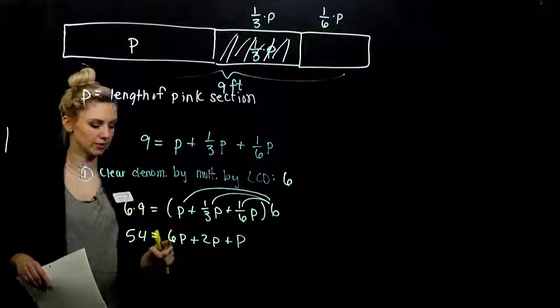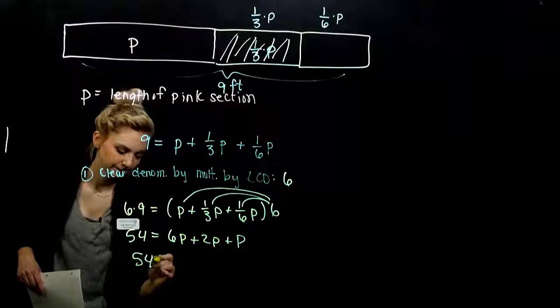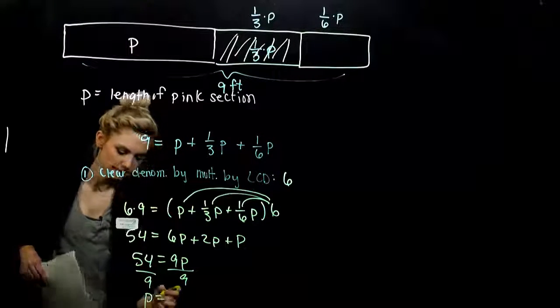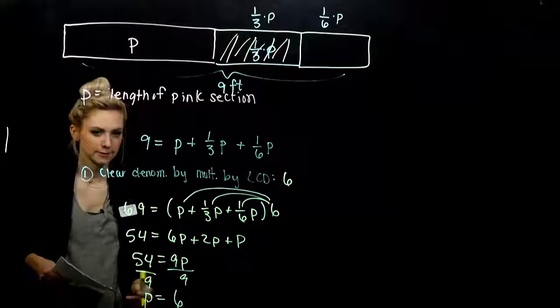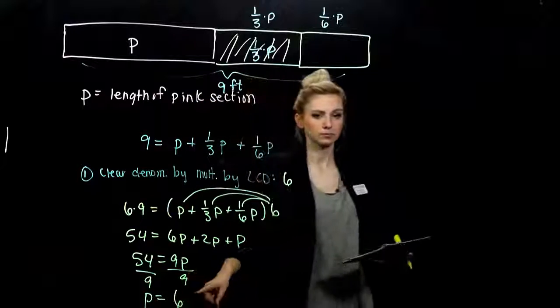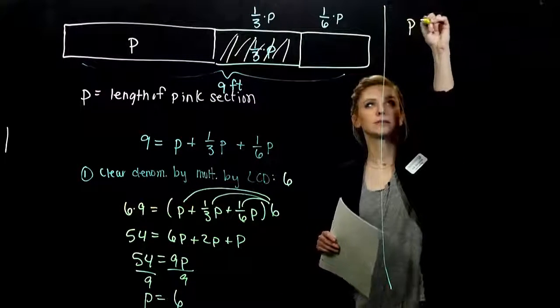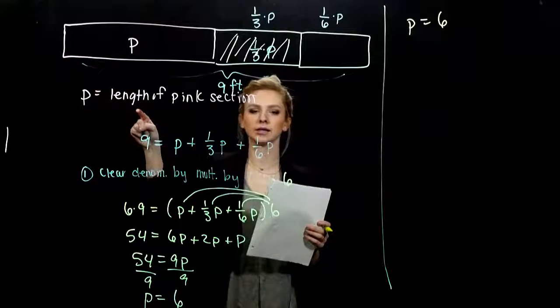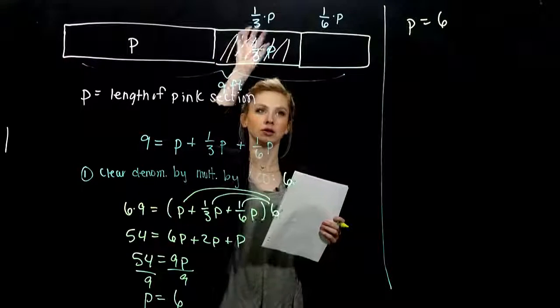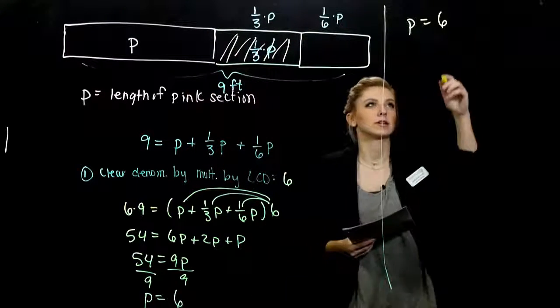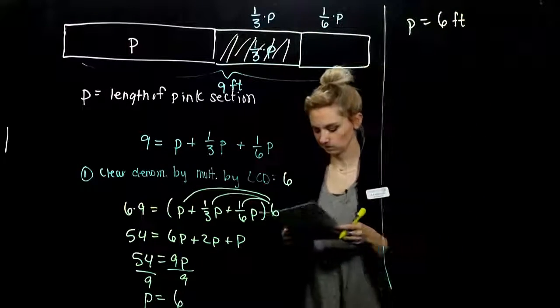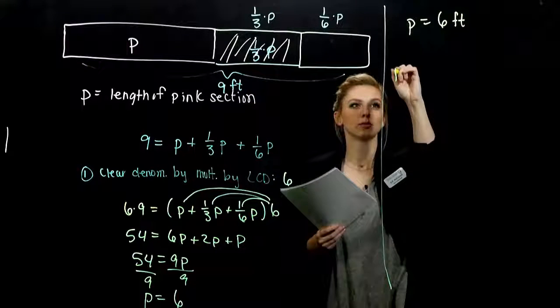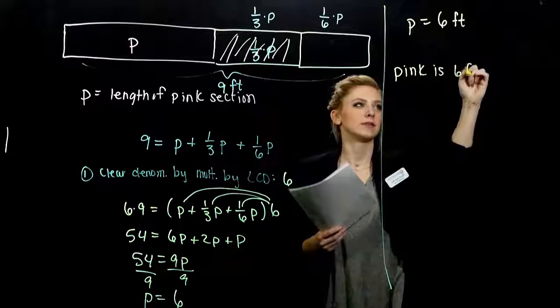So I've got nine altogether. So when I divide both sides by nine, what is p in this case? Six. P is six. What are our units on p? We let p be the length of the pink section. And all of our lengths are in terms of feet. So the pink section is six feet long. So we can figure out the mixed section and the green. Pink is six feet long. Mixed is what? One-third of the pink. So six divided by three gives me two feet.